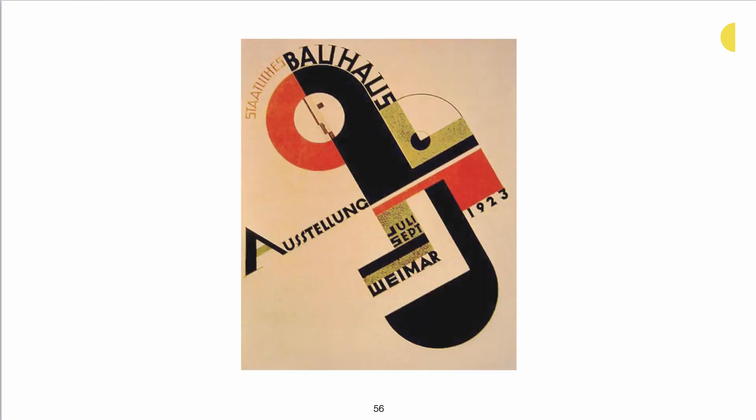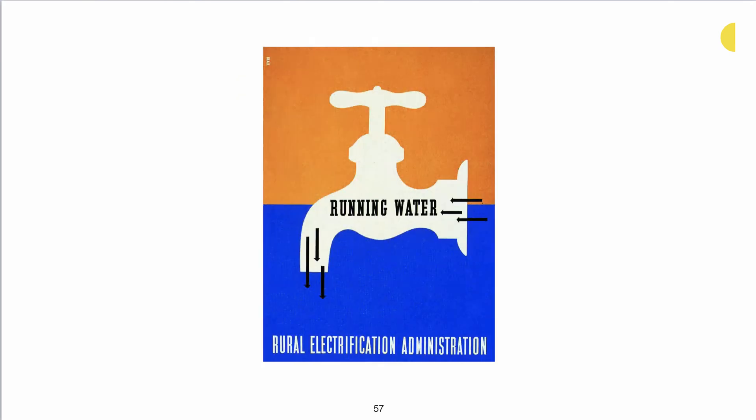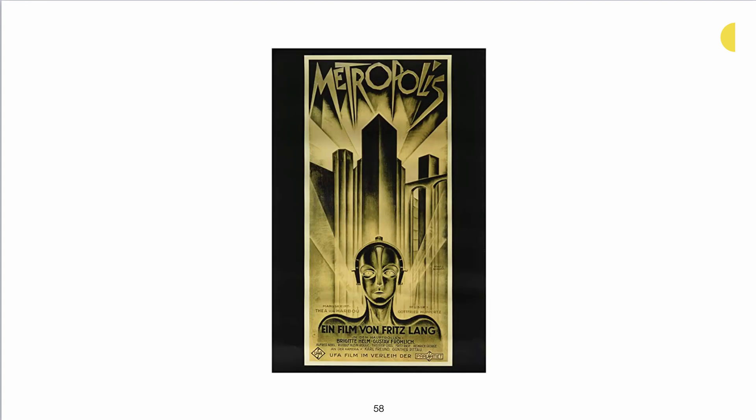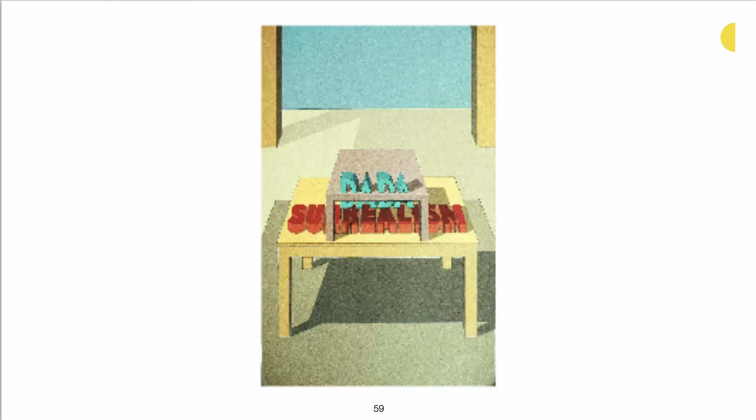Again, this is Bauhaus — it obviously says it right in the piece. Here we've got a piece for Rural Electrification Administration, WPA programs — this has got to be Modern Movement in America. A classic Art Deco poster: we see those geometric shapes, that streamlining and lengthening going on. A really good example of the conceptual image in a poster — how many Dadaists became surrealists, and the word 'real' is isolated on that table.